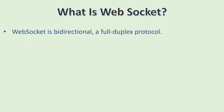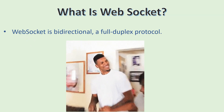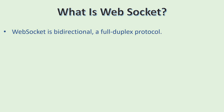And what does full duplex mean? Full duplex means they can talk to each other simultaneously. So WebSocket is bi-directional, which means the communication between client and server is bi-directional, not uni-directional. And the client and server can both send data simultaneously, not one by one.